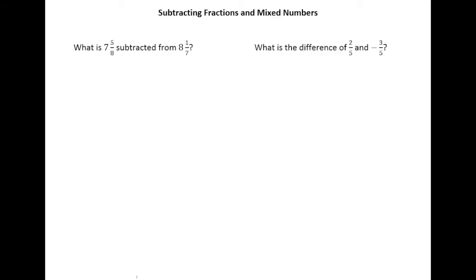So remember, when you are subtracting from something, the thing you're subtracting from needs to be there first. So this is one of those where we have to flip-flop the order. So this is 8 and 1/7 minus 7 and 5/8.